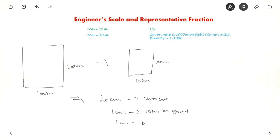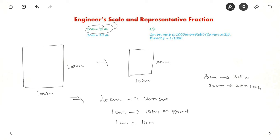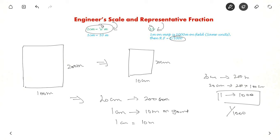So 1 centimeter equals 10 meters — that is the engineer scale, where the two units differ. Representative fraction is when both are in the same units: 20 centimeters on map is 200 meters on ground. Converting everything to centimeters: 200 meters is 20,000 centimeters, so 20 / 20,000 = 1/1000. This is the representative fraction — 1 unit on map equals 1000 units on the field. These are the two ways scale is expressed.